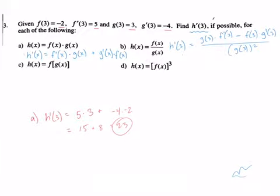We have g of three which is three, multiplied by f prime of three which is five, minus f of three which is negative two, multiplied by g prime of three which is negative four.